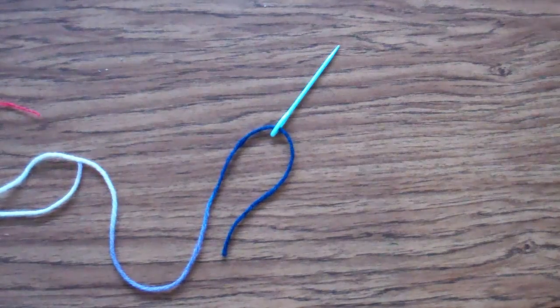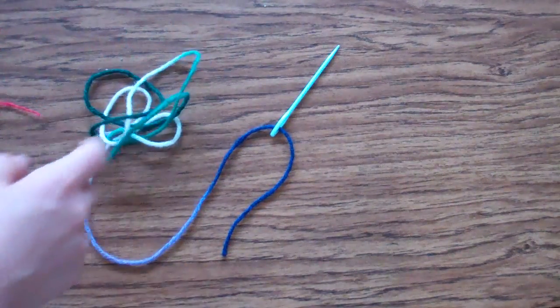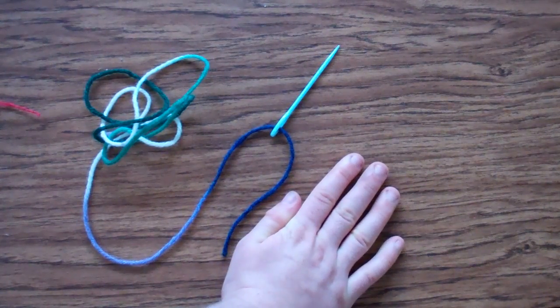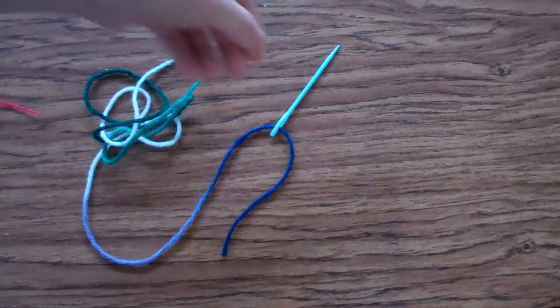You can see there's a really long end and then there's a short end. That short end is called slack. Having it about the length of your hand is good when you weave.